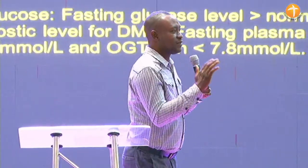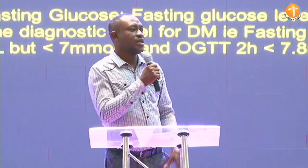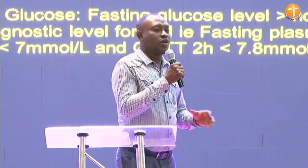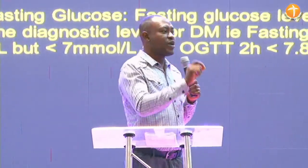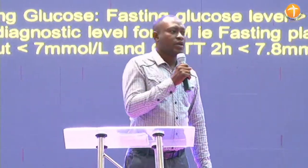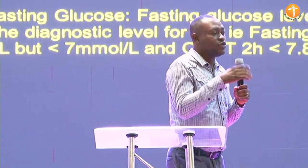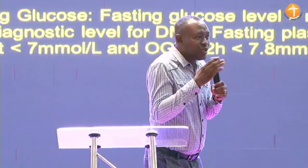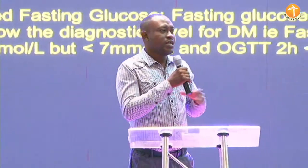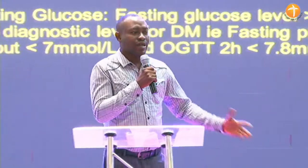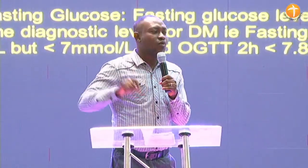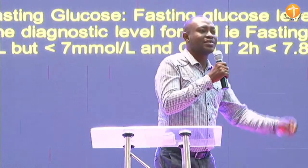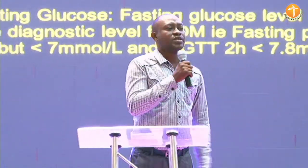We said for us to say someone has diabetes, there is a diagnostic level for it. The normal fasting blood sugar is 3.8 to 6.1 millimole per liter. Some diagnostic centers use milligrams per dL, which is 70 to 110 mg/dL. Between 110 to 125 mg/dL is pre-diabetes — the person is not yet confirmed a diabetic patient. But once it is greater than 126 mg/dL, or greater than 7.0 millimole per liter, then we say the person has diabetes.